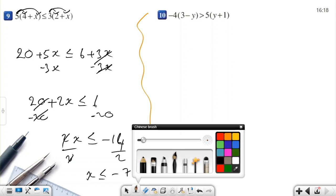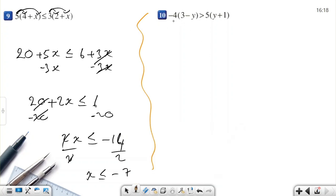This is the last example of this section. You can find similar examples in your book. Negative 4 times 3 is negative 12. Negative 4 times negative y is positive 4y, greater than 5 times y is 5y. And 5 times 1 is 5.